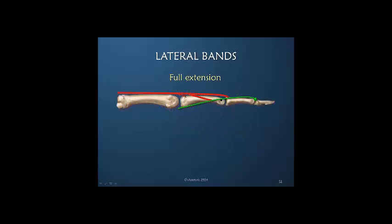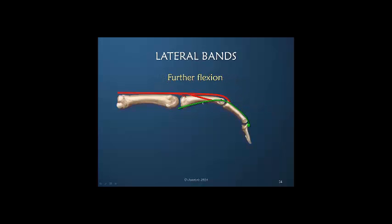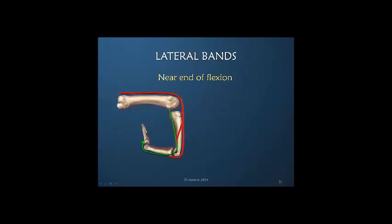Looking at full finger extension and then the beginning of flexion, we can see imagined tension in the lateral band as flexion begins. With greater flexion, that tension drives migration, but tension cannot be excessive or movement would be restricted. There is increasing tension centrally because the central slip must travel over the apex of the PIP joint during flexion. In full flexion near end range, there is less tension on the lateral band as it has dropped volarly at the PIP joint, but increased tension centrally due to the need to pass over the dorsum of the joint in the maximally flexed position.